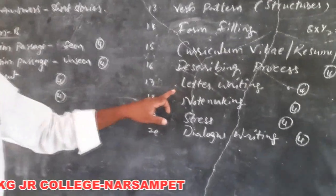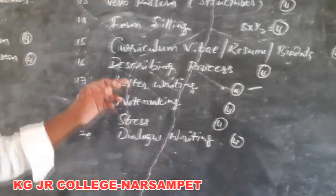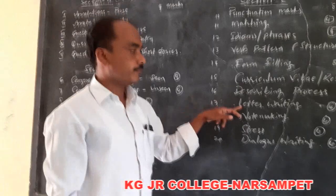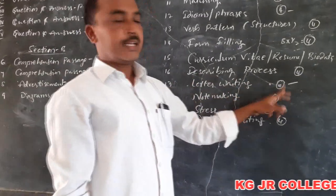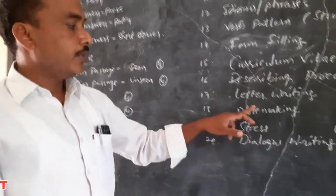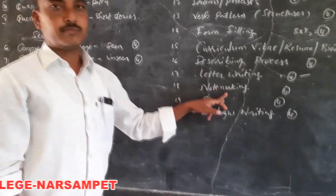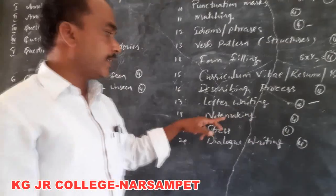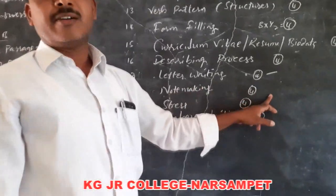The next bit is letters — one formal letter and one informal letter will be asked and you have to write that under the given format. After that is note-making: you should first comprehend the given passage, then mention a suitable title, and present it in four to five points very briefly. This must also be written in a box.